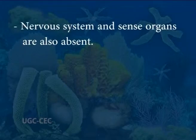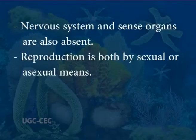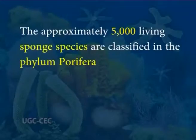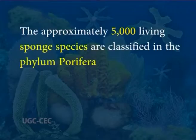Nervous system and sense organs are also absent in sponges. Reproduction is both sexual and asexual. Asexual reproduction takes place by budding or by specialized cells called gemmules, which develop into new sponges during favorable conditions. Life cycle includes a ciliated free-swimming larva called amphiblastula or parenchymula. Sponges also show a great power of regeneration.